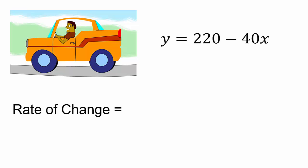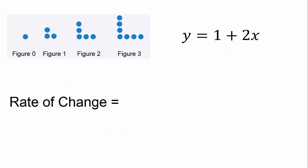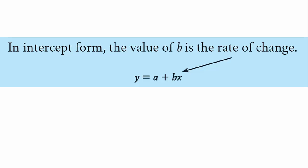In the San Diego problem, the driver gets 40 miles closer to San Diego every hour, so the rate of change is negative 40. In the exercise problem, the number of calories burned increases by 5 every minute — every extra minute of exercise means you burn 5 more calories. The next figure has 2 more dots. In intercept form, the value of B is the rate of change.